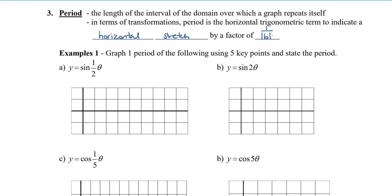Whenever you're graphing any trig function — whether sine, cosine, or tan — always keep in the back of your mind what the basic function looks like. The basic sine function starts at 0, passes through pi, and ends at 2pi, with a maximum of 1 and a minimum of negative 1.